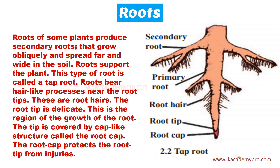Observe the picture carefully. Roots of some plants produce secondary roots coming out from the main root. The radicle that goes into the ground is called the primary root, and from it, more roots branch out — these are called secondary roots. These spread obliquely, far and wide into the soil, helping to support and anchor the plant. This type of root system — one main root with secondary roots branching from it — is called the tap root system.